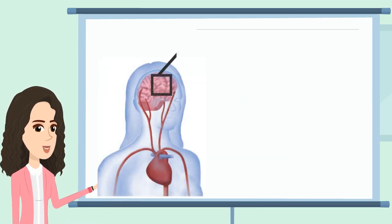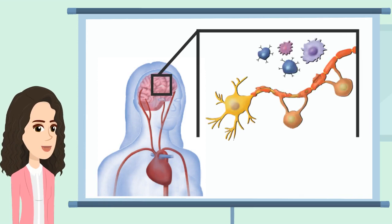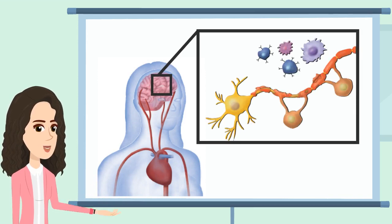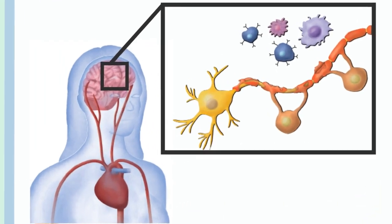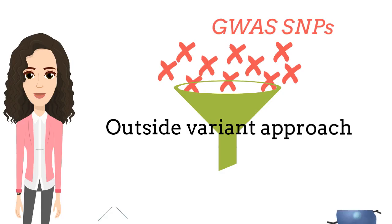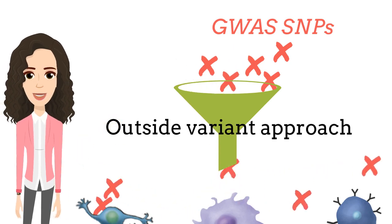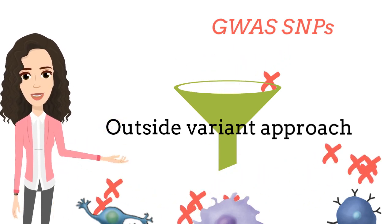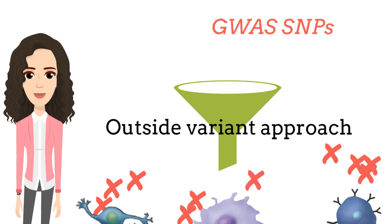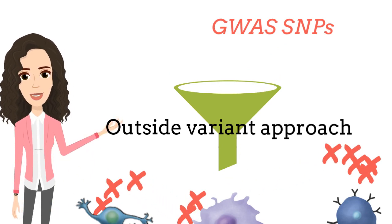Our study implicates cell-intrinsic aberrations outside of the immune system in the genetic risk to MS, and suggests new avenues for therapeutic development. Altogether, these results indicate that applying the outside variant approach to multiple disorders could facilitate rapid delineation of the pathogenic consequence of disease-associated variants.